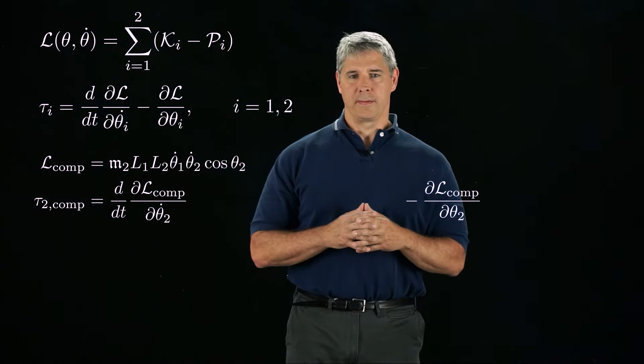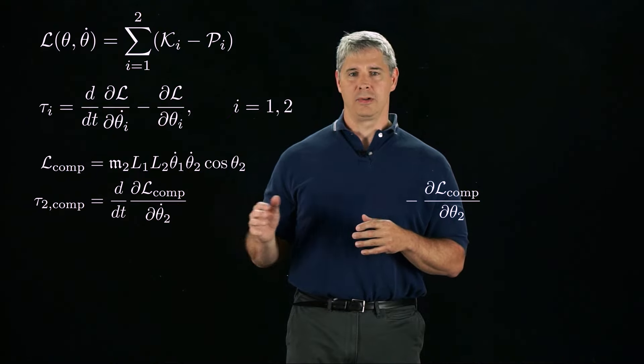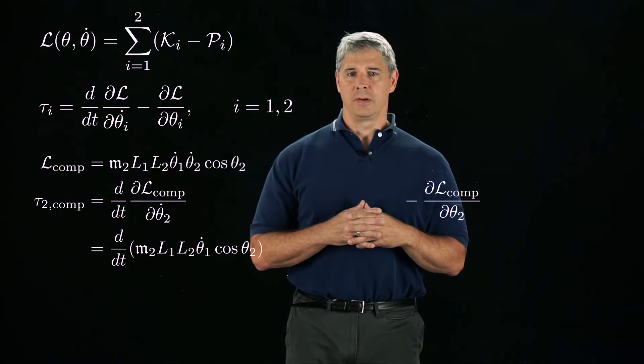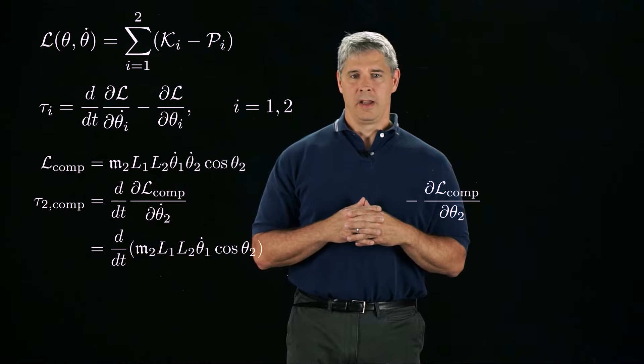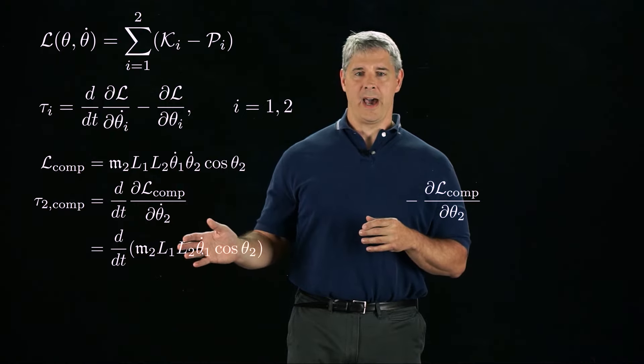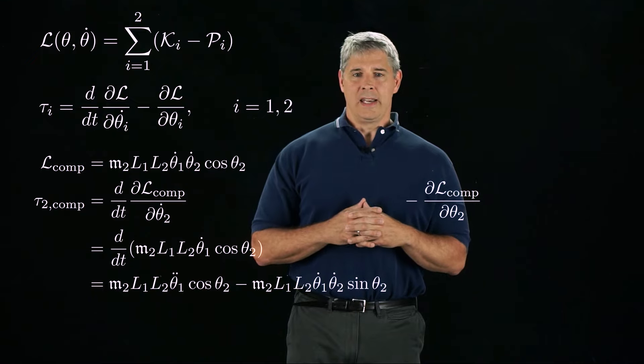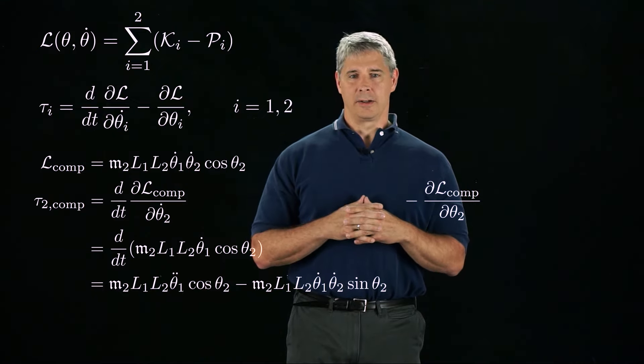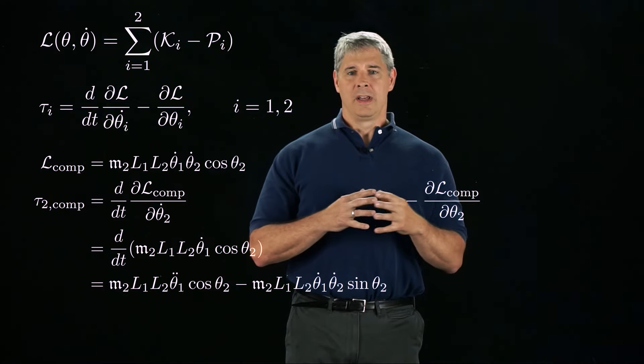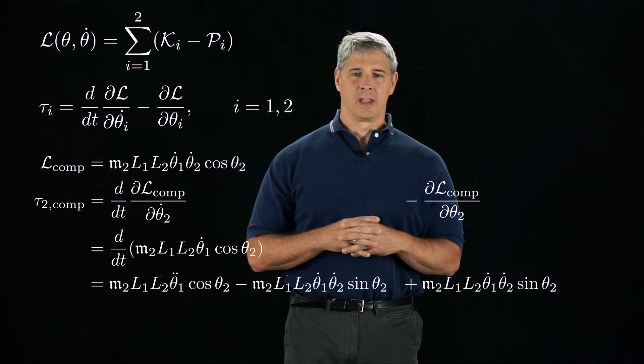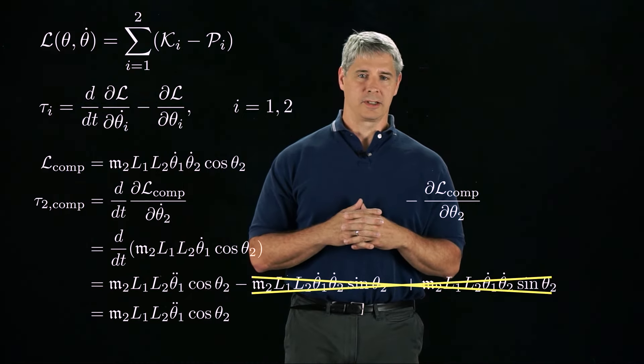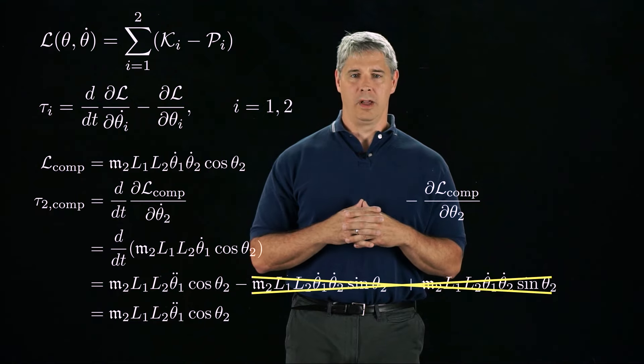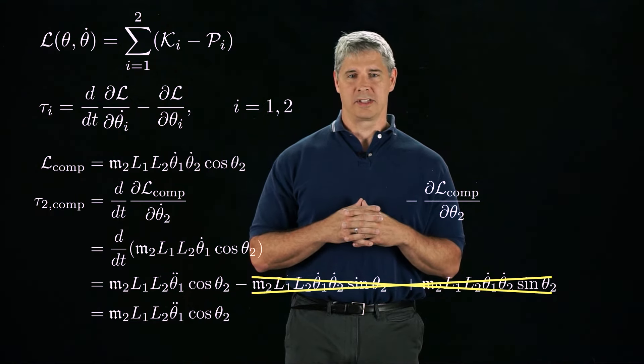If we take the partial derivative of Lₒₘₚ with respect to θ̇₂, we get M₂L₁L₂θ̇₁ cosine of θ₂, and if we take the time derivative of that, we get the expression you see here. Now we can subtract the partial derivative of Lₒₘₚ with respect to θ₂ to get this expression. The last two terms cancel, so the final torque at joint 2 due to Lₒₘₚ is M₂L₁θ̈₁ cosine θ₂.